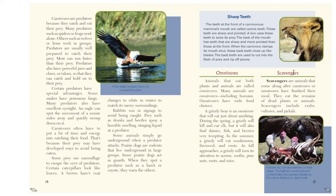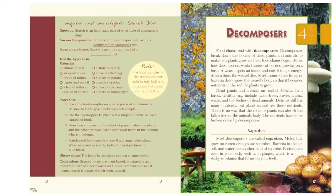There is one other special type of consumer called scavengers. Scavengers are animals that come along after carnivores or omnivores have finished their meal. They eat the remains of dead plants or animals. Scavengers include crabs, vultures, and jackals — they eat whatever's left after the carnivores and omnivores have finished feasting.